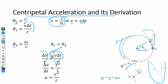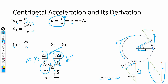Multiplying both sides by v, we get Δv = v² · Δt / r. Dividing both sides by Δt, we obtain Δv / Δt = v² / r. By definition, acceleration is the time rate of change of velocity, so Δv / Δt is acceleration. Therefore, the centripetal acceleration equals v² / r.